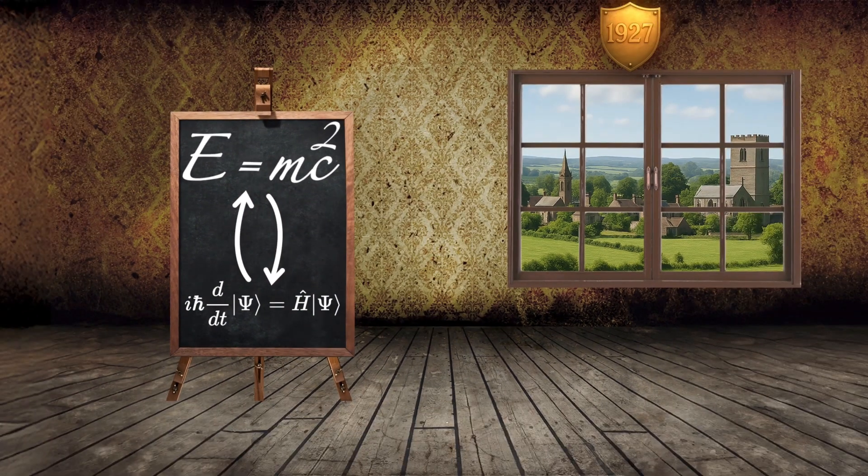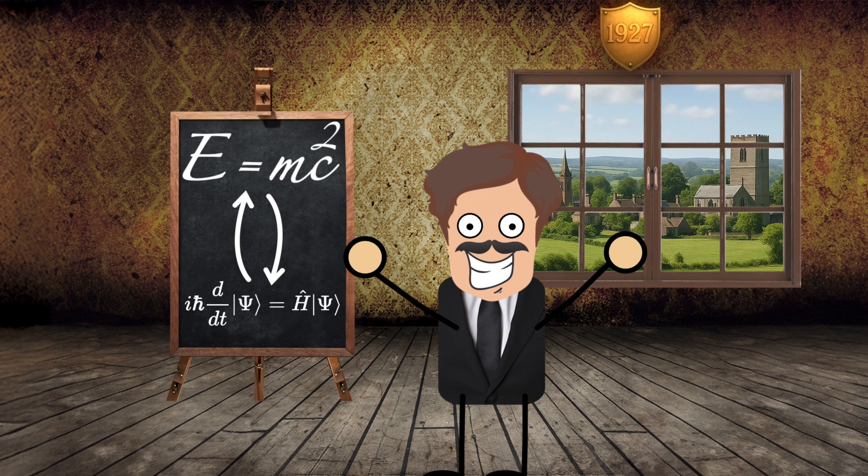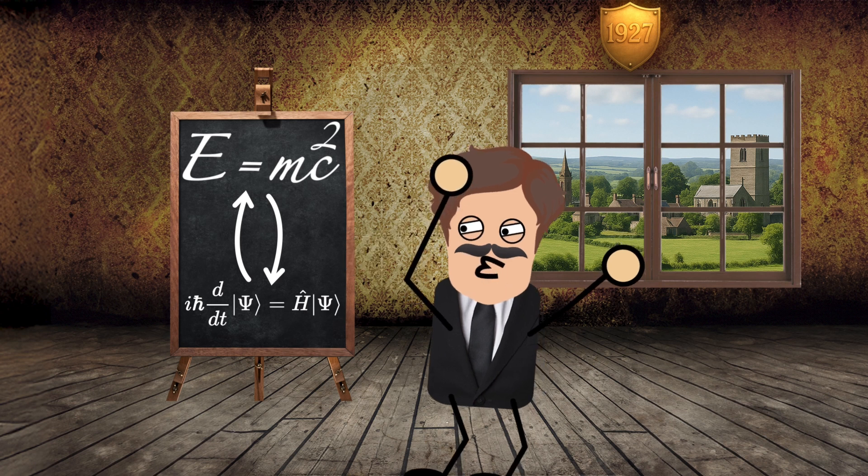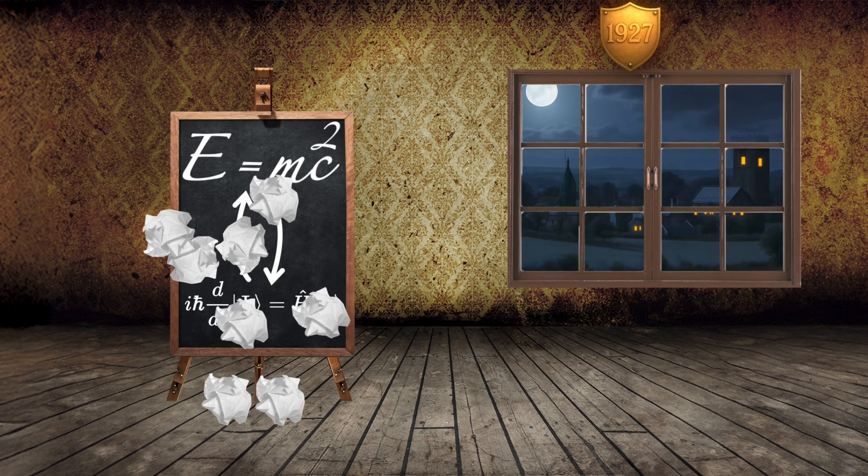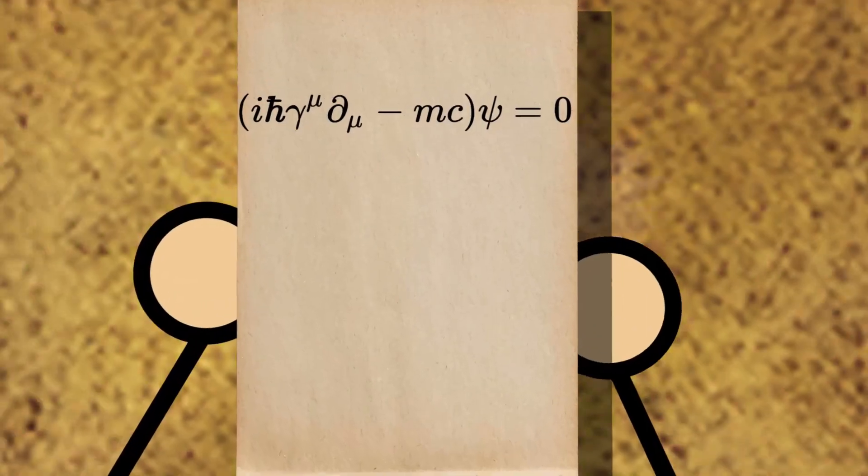So Paul Dirac enters the scene. He tries to make these equations work together. He worked day after day after day until he came up with a new equation.